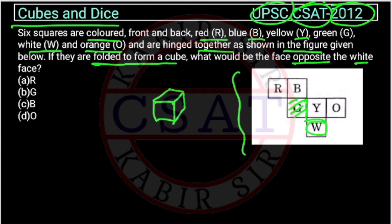So Y will come on the right-hand side, B will come this side, then R will come this side, O will come on the top, and this W will come this side.